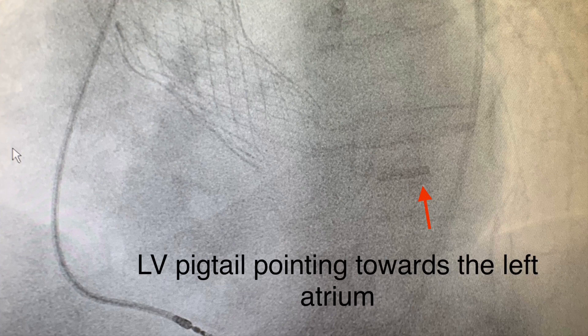But if we go back to the angiographic view, we notice that the LV pigtail is actually pointing towards the left atrium. So what happened is that the LV pigtail popped into the left atrium and the pressure that we were seeing is actually the left atrial pressure.